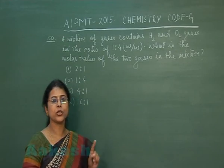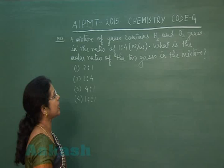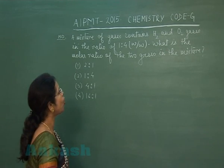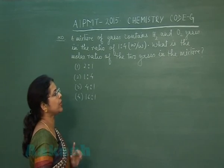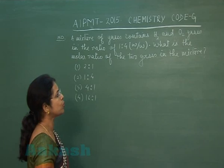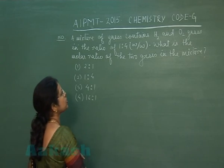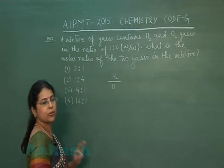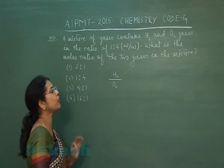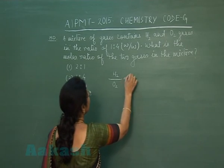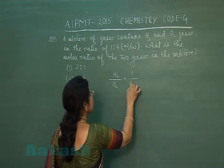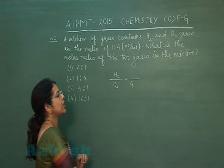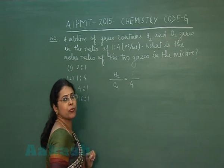Next question is question number 150. A mixture of gases contains hydrogen and oxygen gases in the ratio of 1 to 4 by weight. What is the molar ratio of the two gases in the mixture? We have two gases: hydrogen and oxygen. Their mass ratio is 1:4, so I take hydrogen as 1 gram and oxygen as 4 grams.